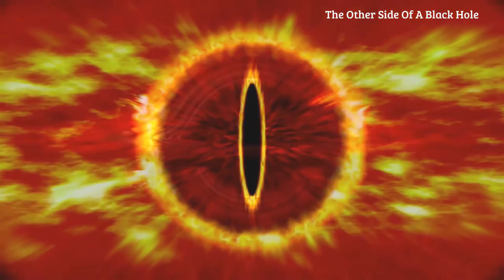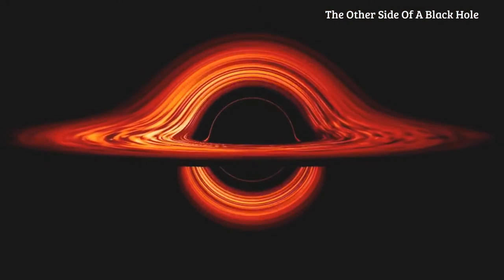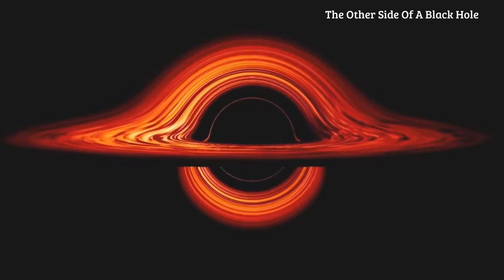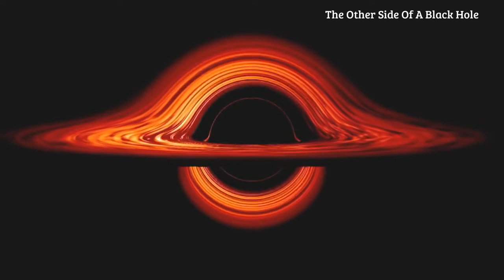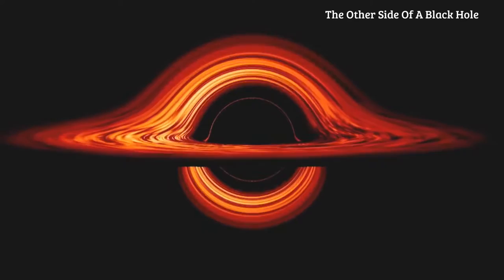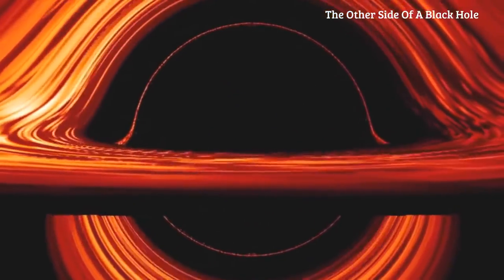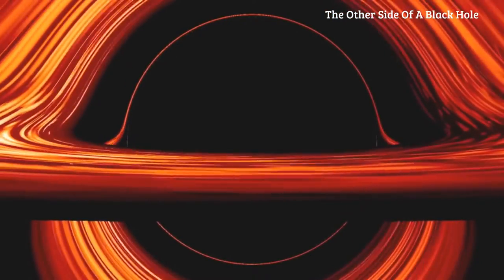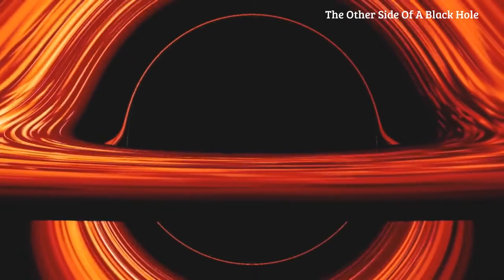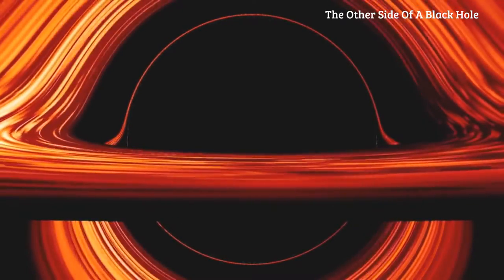Black holes are such powerful gravitational monsters that they warp and twist the fabric of space-time. If you get up close, you'd see something like this: an accretion disk visible from both above and below. There is an inner ring caused by light that goes all the way around the black hole before escaping and eventually making it to us.